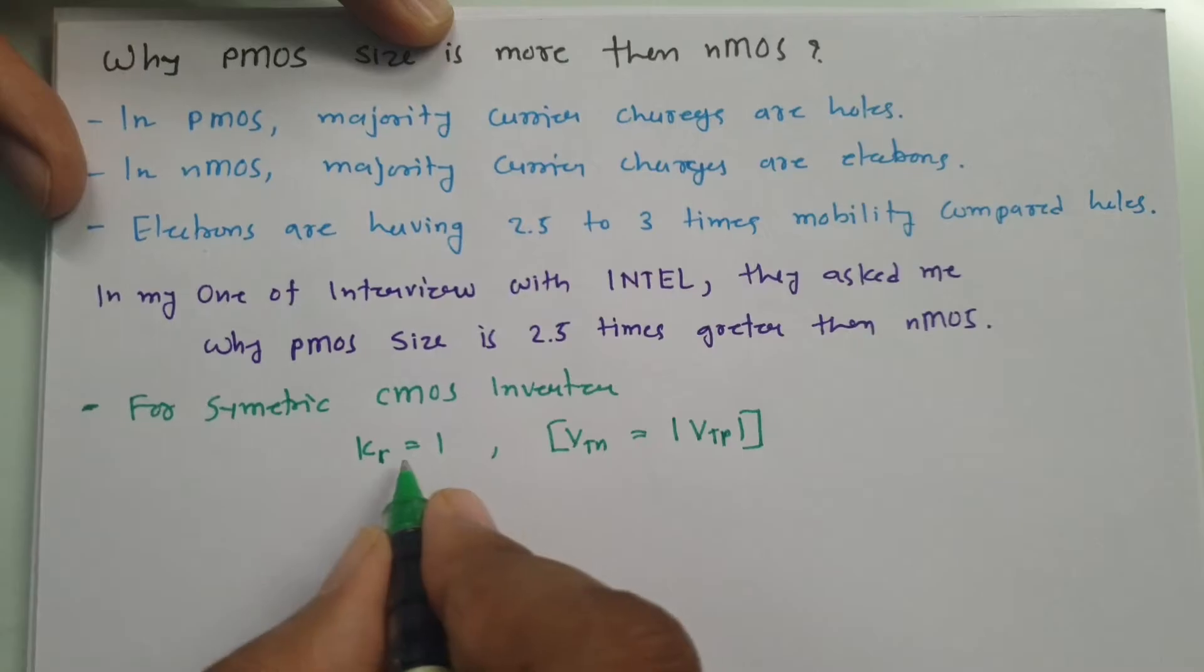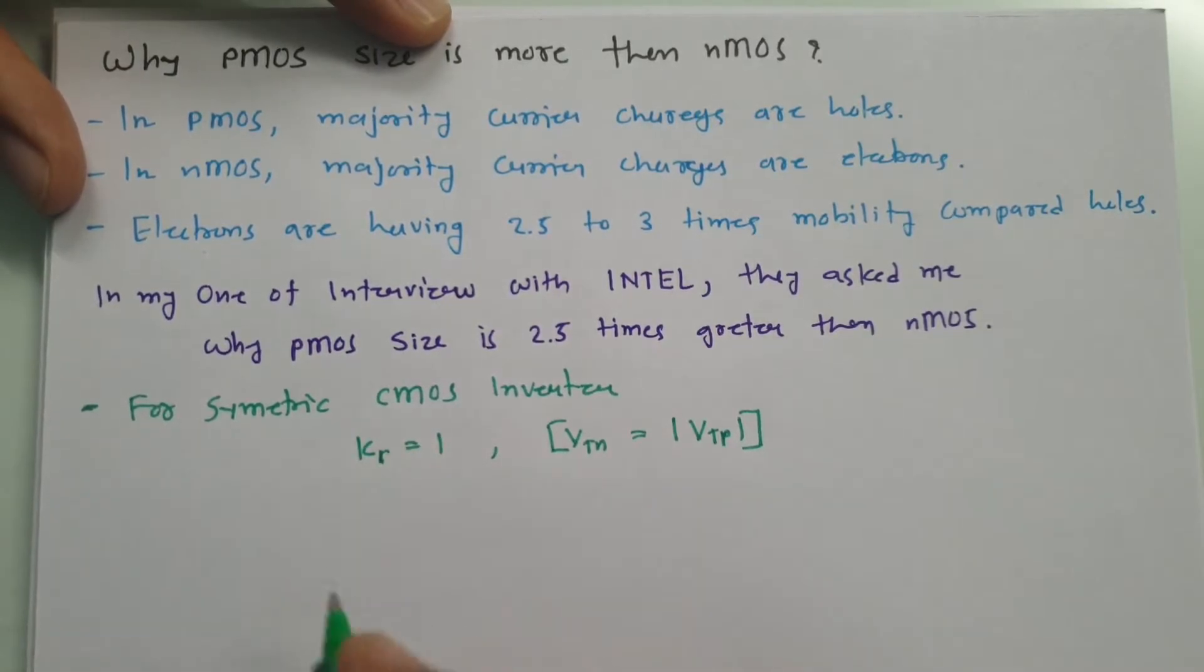Now see, this KR is equals to 1, that will justify this answer. You see how, KR, that is KN by KP.